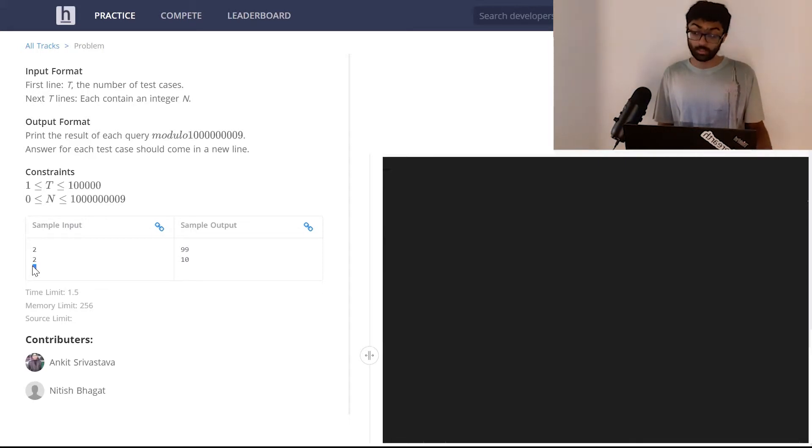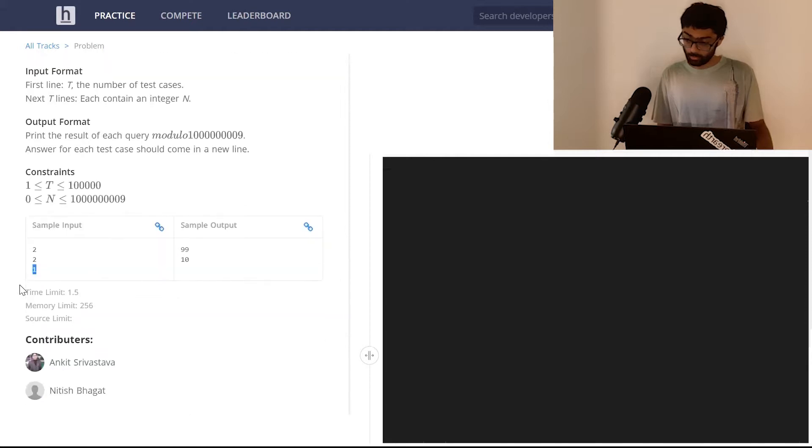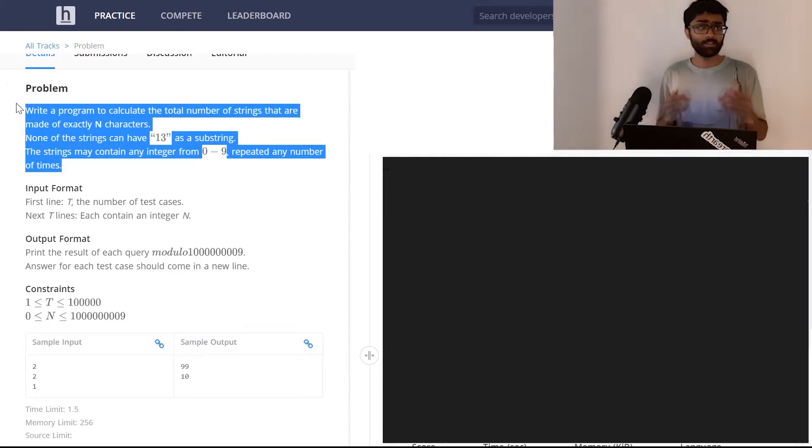We've got to print the result of each query modulo 1000000009. We'll look at that condition later. First, we'll try obtaining a solution for the general scenario, then we look at the modular part. Think about it yourselves, and once you're done attempting the question, head on back. The coding link is in the description.